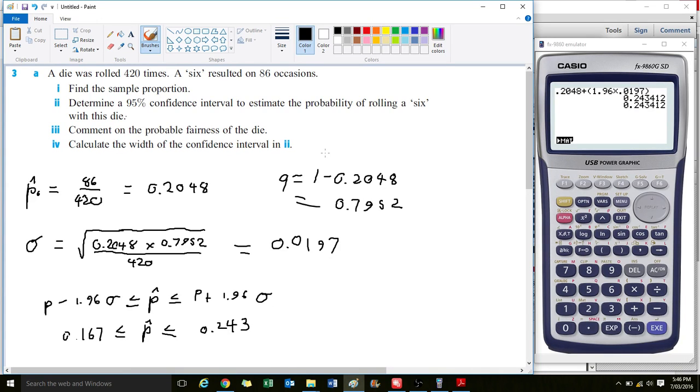If it was a fair die, we would expect the probability of it being a six to be one divided by six. There's six faces, and if each has an equal chance of appearing, the probability is 0.167.